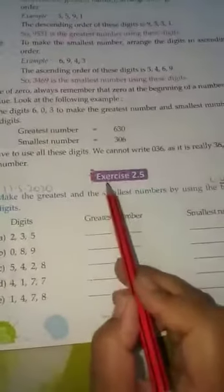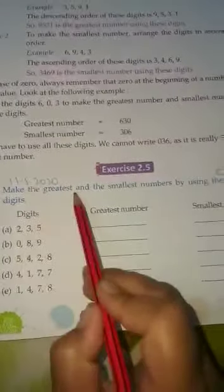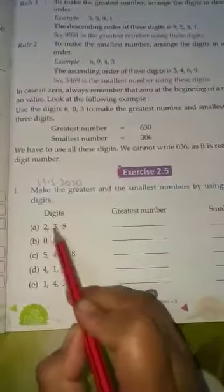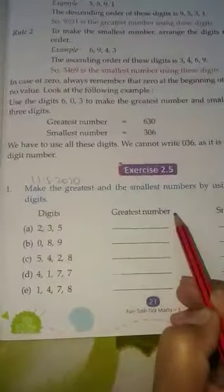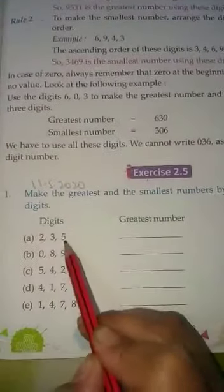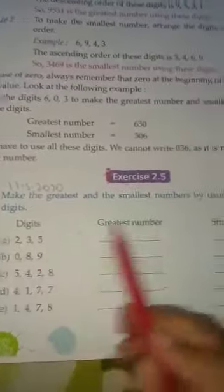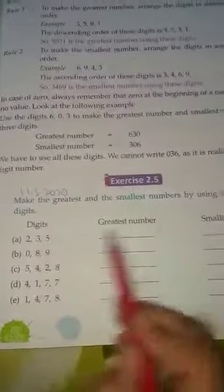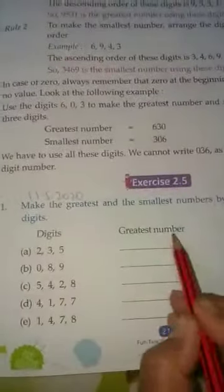Last, I am going to explain Exercise 2.5: make the greatest and smallest numbers by using the following digits. For digits 2, 3, 5, we have to make the greatest number. In the greatest number, we write the digits in descending form, and in the smallest number, we write the digits in ascending form.